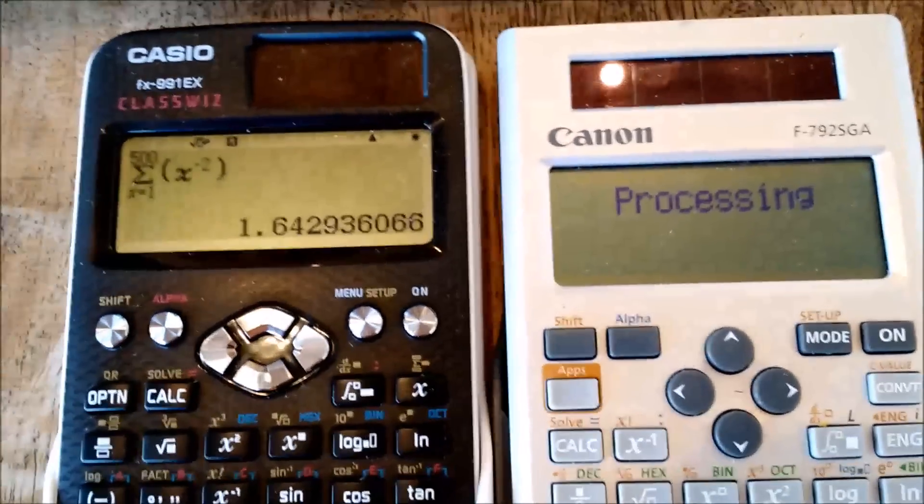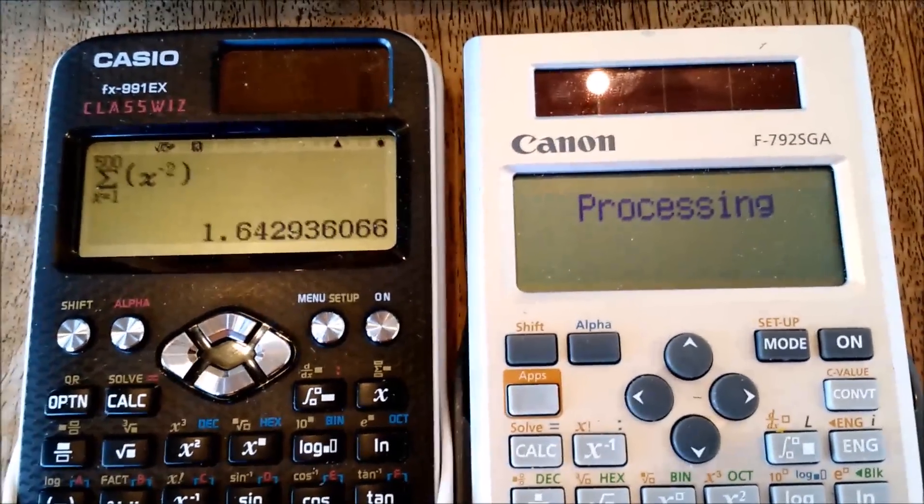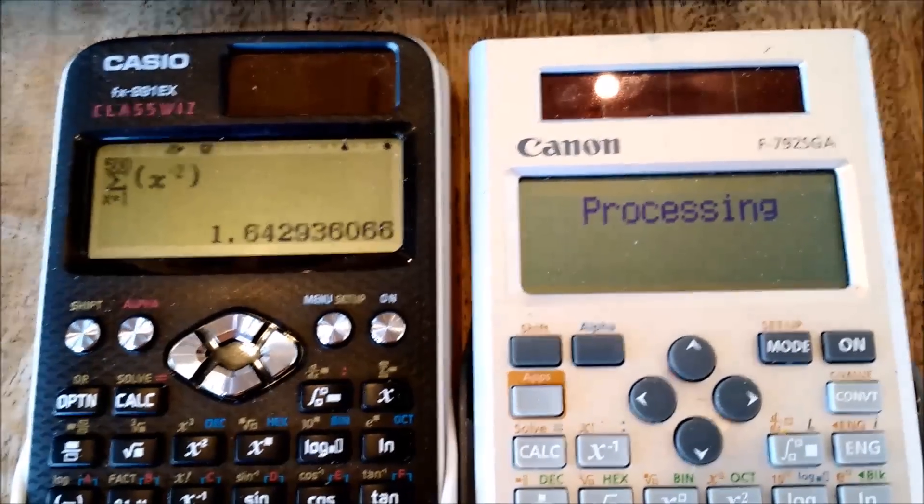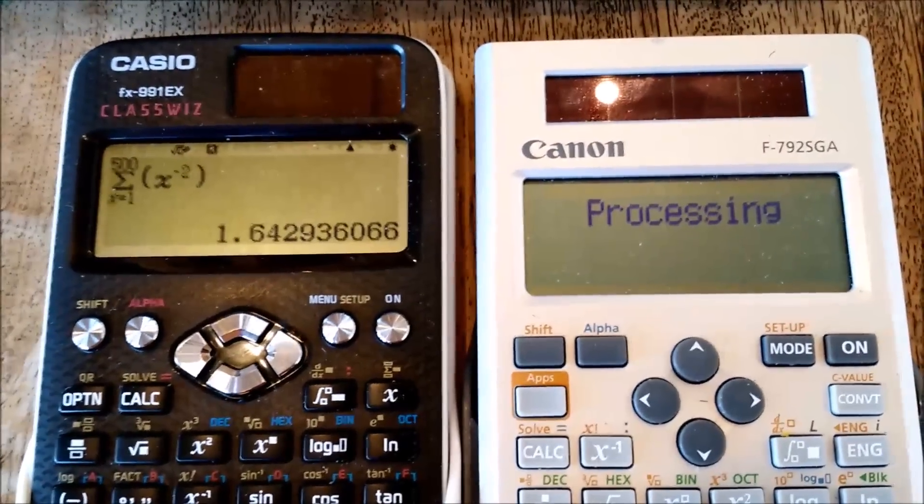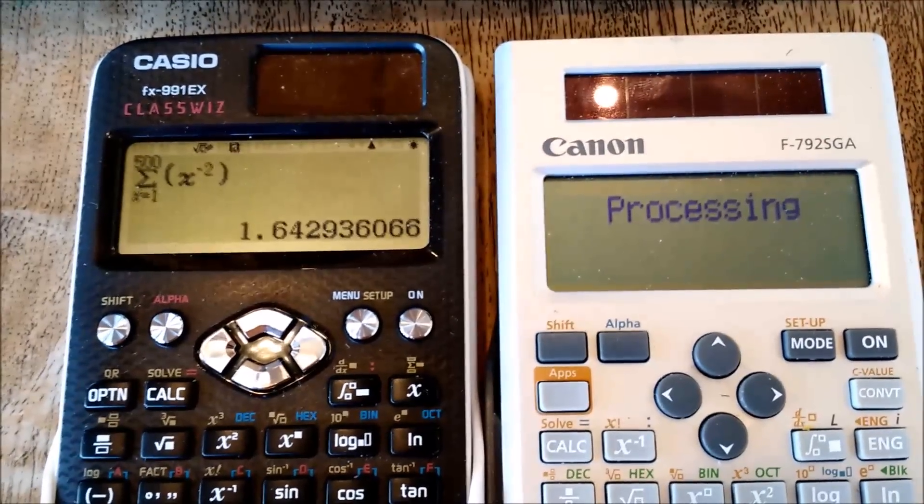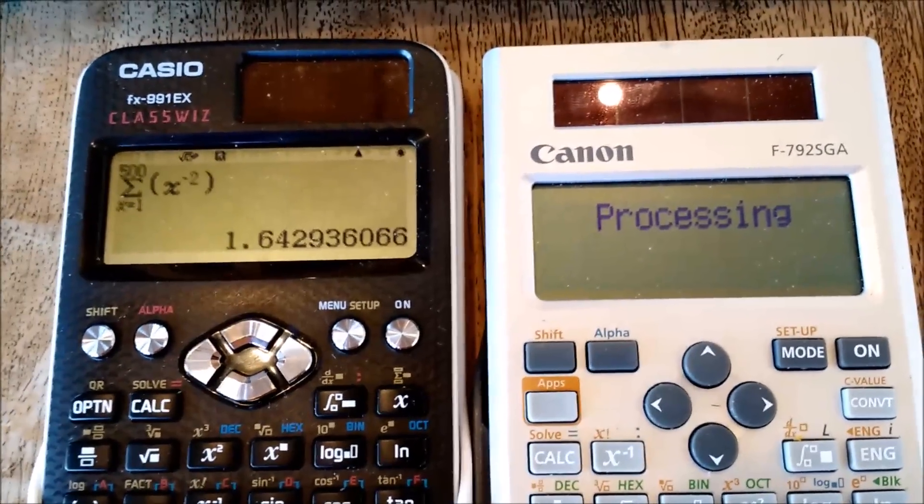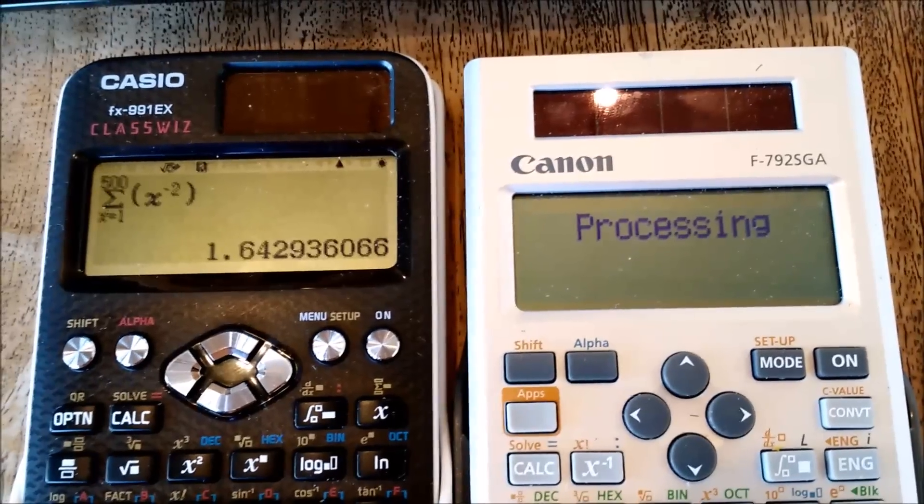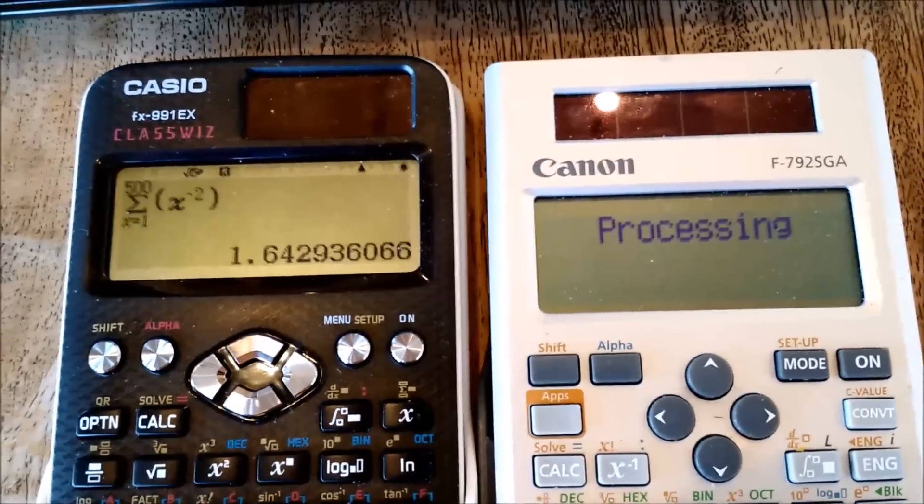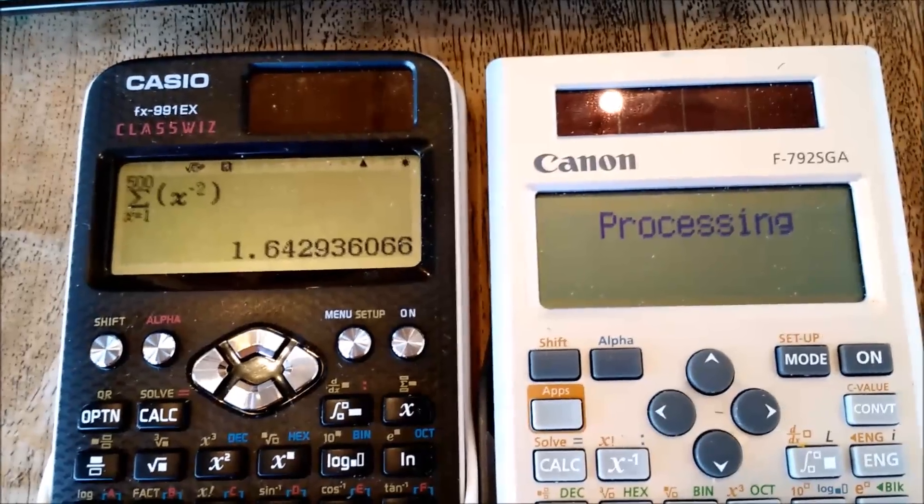Of the calculations I tested, this one seems to have the greatest amount of difference. The other differences are kind of close or reasonably off by anywhere from 5 to 10 seconds. As you can see, the Canon is still processing.